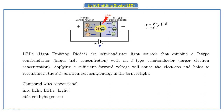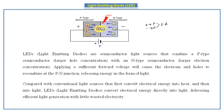Comparing with conventional light sources: in normal light sources, electrical energy is first converted to heat and then to light. But in the case of the LED, it converts electrical energy directly to light energy, delivering efficient light generation with little wastage of electricity. That's why we get lower electricity bills when using LED bulbs. In LED, the wastage of electricity is very less compared to normal electrical lights, because it does not go through the intermediate heat conversion step.